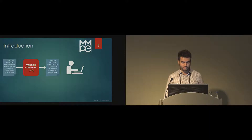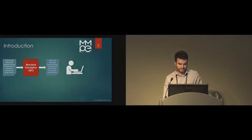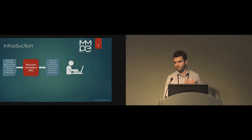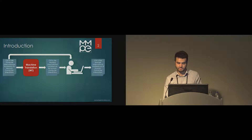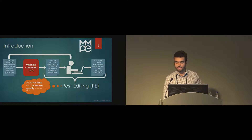Since neural machine translation has gotten very good in recent years, you can also take the same text, pass it to a machine translation system, and already get a very high quality proposal in the target language. Of course, you cannot publish that right away — it's not good enough yet — and you still need a human to confirm it is correct. You can pass this text alongside the source to a human professional translator, who edits the mistakes made by the machine. This process is called post-editing, and it has been shown to not only save time but also increase the quality of the final translation.